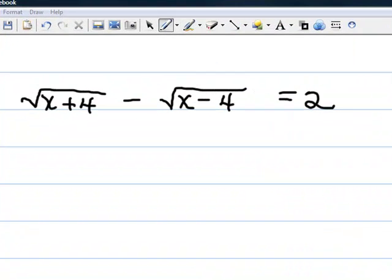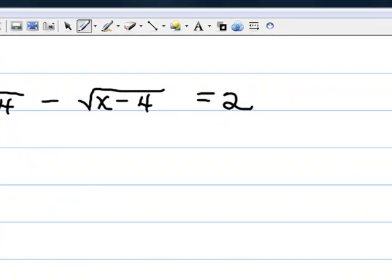Notice here we have a problem that has two radicals in it instead of one. Remember when we had one radical, we just isolated the radical on one side and squared both sides? We're going to have to do that here, but we're going to have to do it twice.